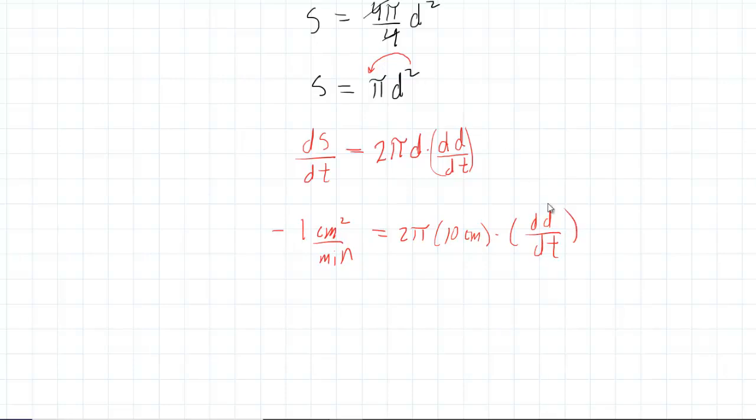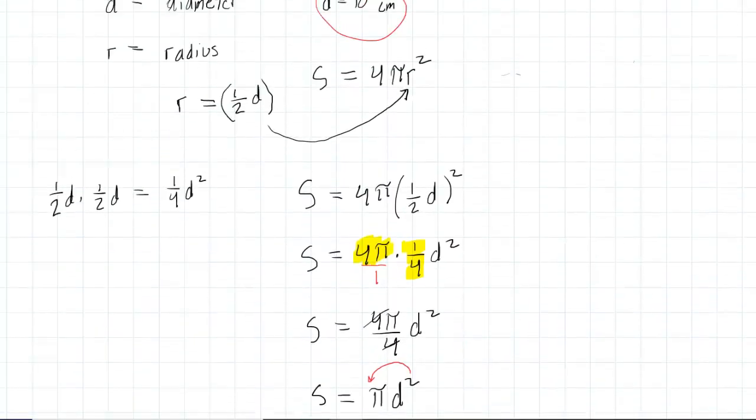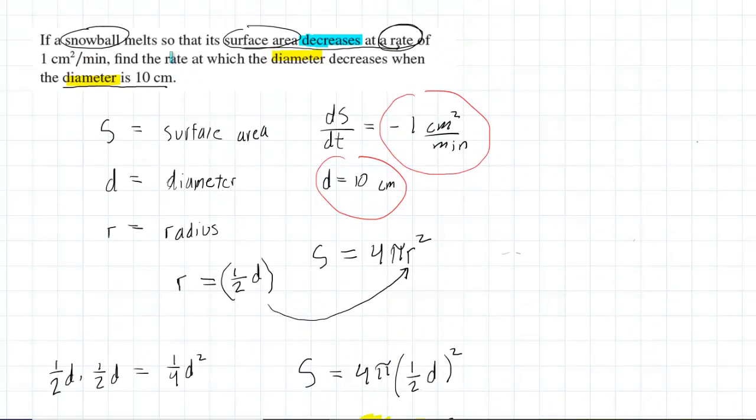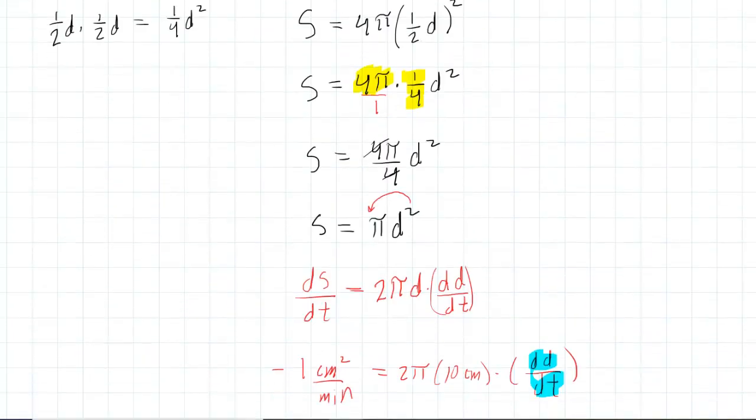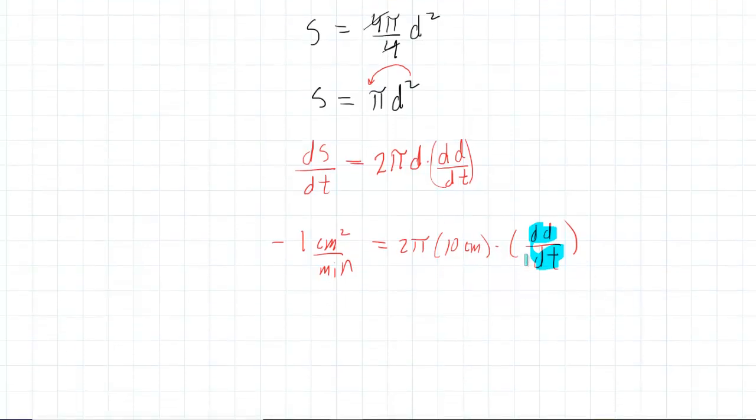And it turns out this is actually what we're looking for. Go back and remind yourself the question wanted the rate at which the diameter was decreasing. So that would be this dD/dt quantity.